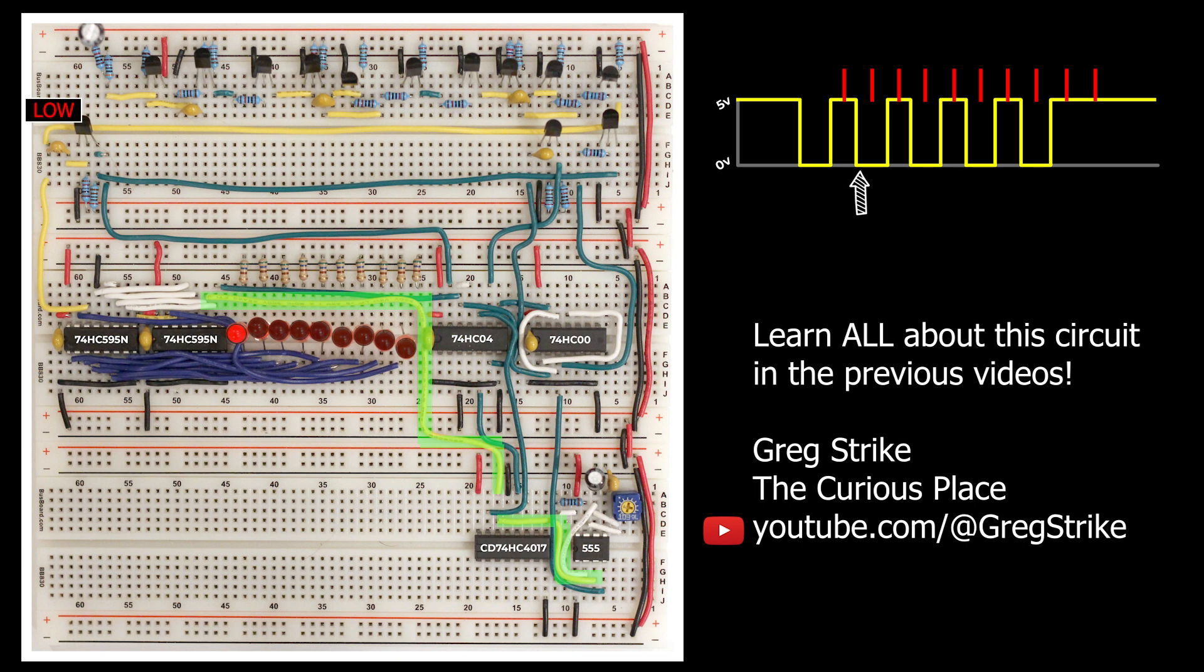Then, some time has passed and our next bit is ready. We get our next clock pulse, which again triggers the shift registers and the counter. This happens over and over again until we get to our last stop bit.